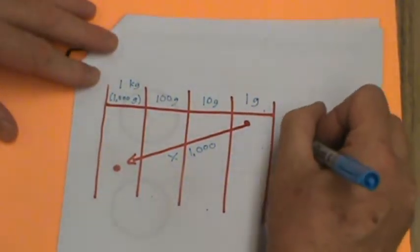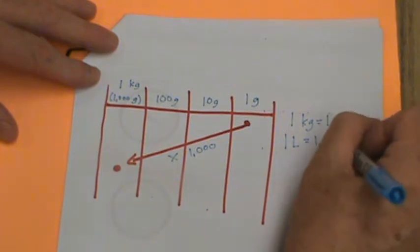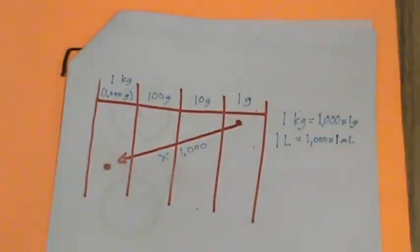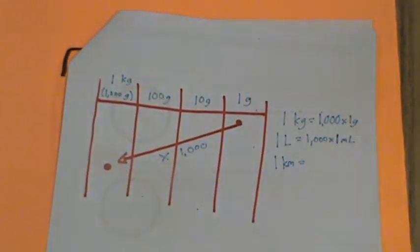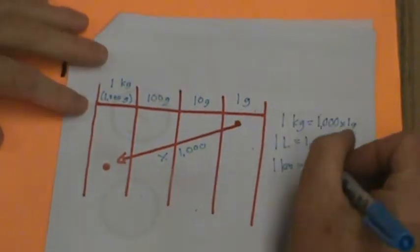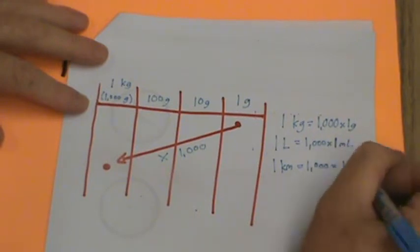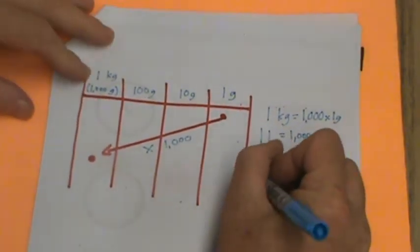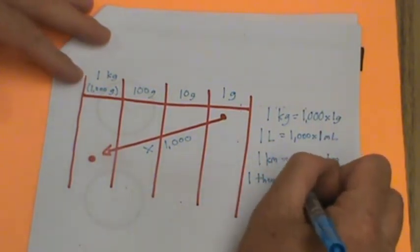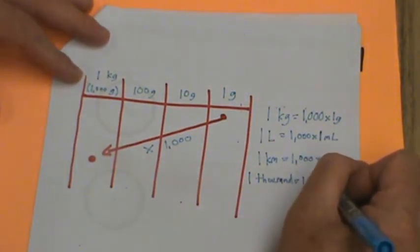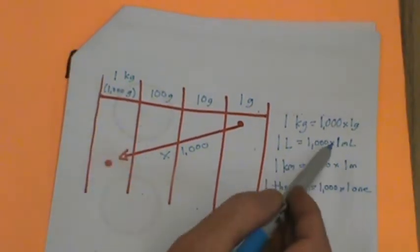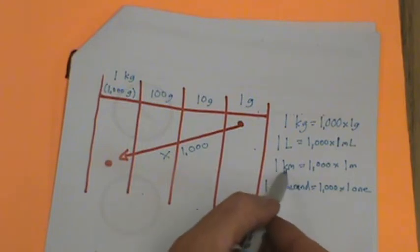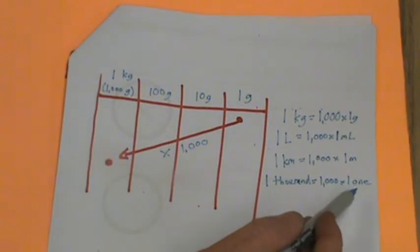So one gram times 1,000 equals one kilogram. The same could be said for our liters, right? One liter equals 1,000 times one milliliters, right? And we could also do it for kilometers, for distance. I could say one kilometer equals 1,000 times one meter. And if we really want to show this, all this together, we say 1,000 equals 1,000 times one one. So we have one gram. We multiply it by 1,000. We get 1,000 grams. And that gives us one kilogram. Same thing over here. One liter equals 1,000 times one milliliters. One kilometer equals 1,000 times one meters. And 1,000 equals 1,000 times one one. Okay.